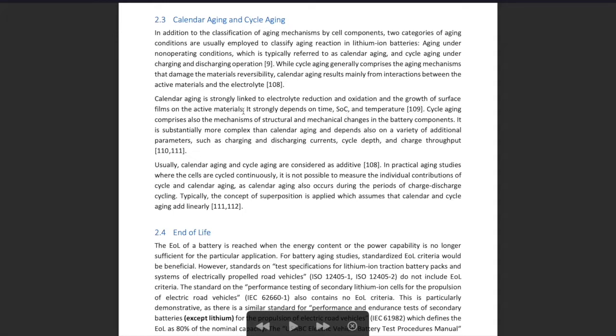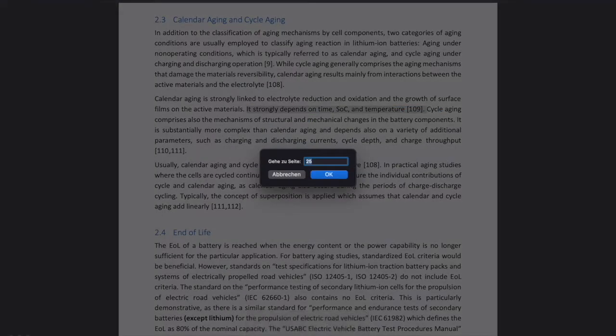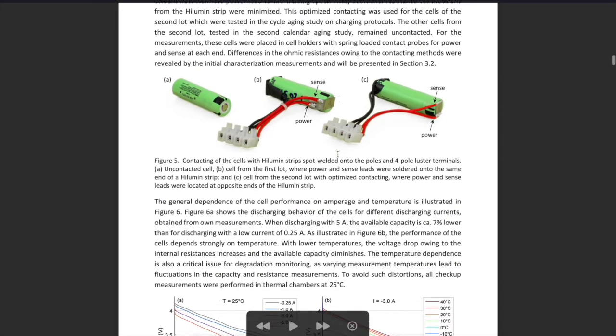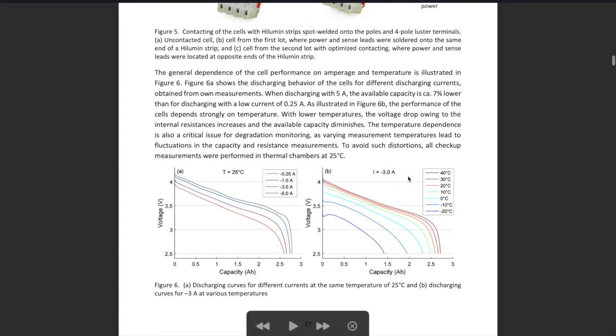When the MacBook sits on top of a desktop plugged in, we're mainly concerned with calendar aging. It's strongly dependent on time, state of charge, and temperature. Here you see a typical cell—of course in your MacBook they look a bit different, but the chemistry is kind of the same.